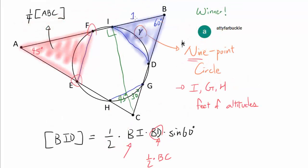If BI is 1, let's think of this as 1 for the moment, then we know IC is square root of 3, 30-60-90 triangle.